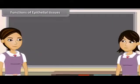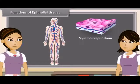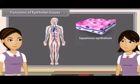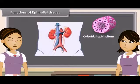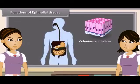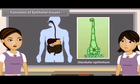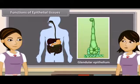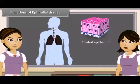Functions of epithelial tissues: Squamous epithelium protects underlying body parts from mechanical injury, entry of germs, chemicals, and drying. Cuboidal epithelium helps in absorption, excretion, and secretion, and also gives mechanical support. The main function of columnar epithelium is absorption and secretion. Glandular epithelium is responsible for secretion from glands. The rhythmic, coordinated beating of cilia of ciliated epithelium moves solid particles in one direction through ducts.